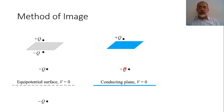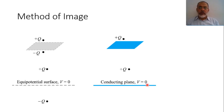Effectively, this is equivalent in analogy to a mirror. For example, if you have a candle or a light source in front of a mirror, it is equivalent to two sources without the mirror.